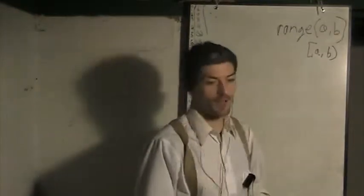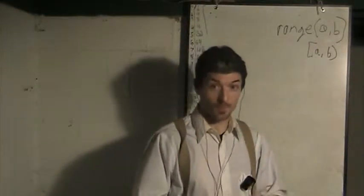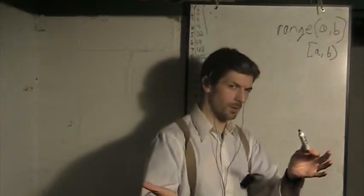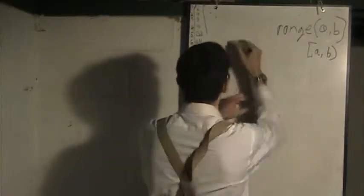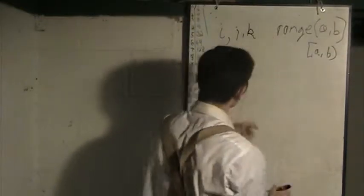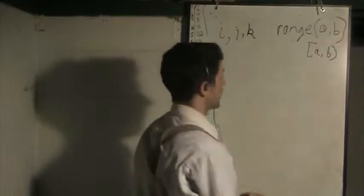So the variable most commonly utilized in for loops, in almost any programming language, are what? I, J, and K. Let's write a quick for loop with the range function.